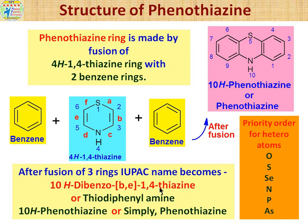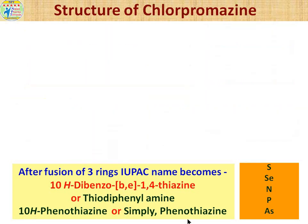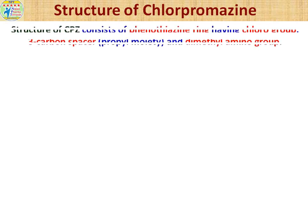The IUPAC name of the fused phenothiazine ring is represented as: hydrogen is at the 10th position, two benzene rings are fused — so the word 'dibenzo' comes — through the B and E bonds — giving 'B,E' — followed by '1,4-thiazine'. This ring can also be represented as thiodiphenylamine, or as 10H-phenothiazine, or simply phenothiazine.